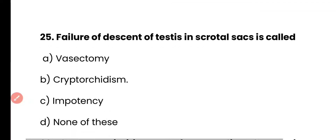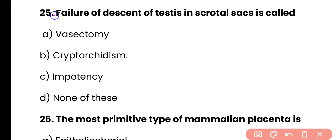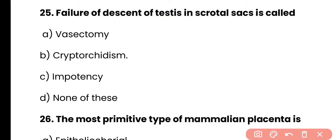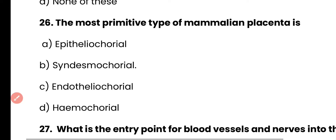Question 25: Failure of descent of testes into the scrotal sac is called — vasectomy, cryptorchidism, impotency, or none of these? Correct answer is option B. If testes fail to descend into the scrotal sac, this condition is known as cryptorchidism.